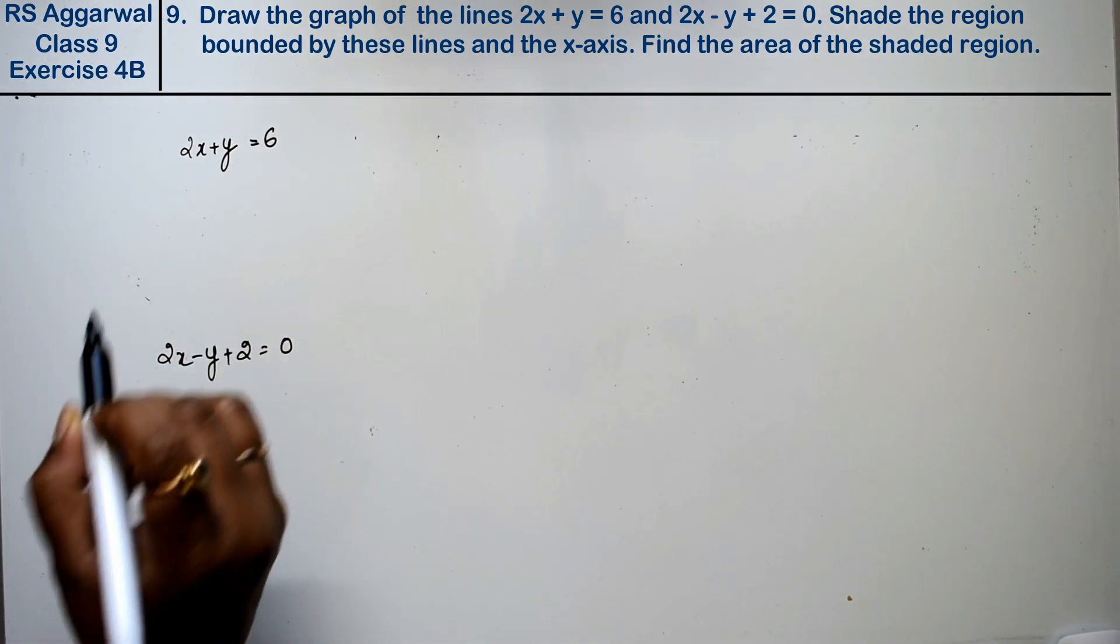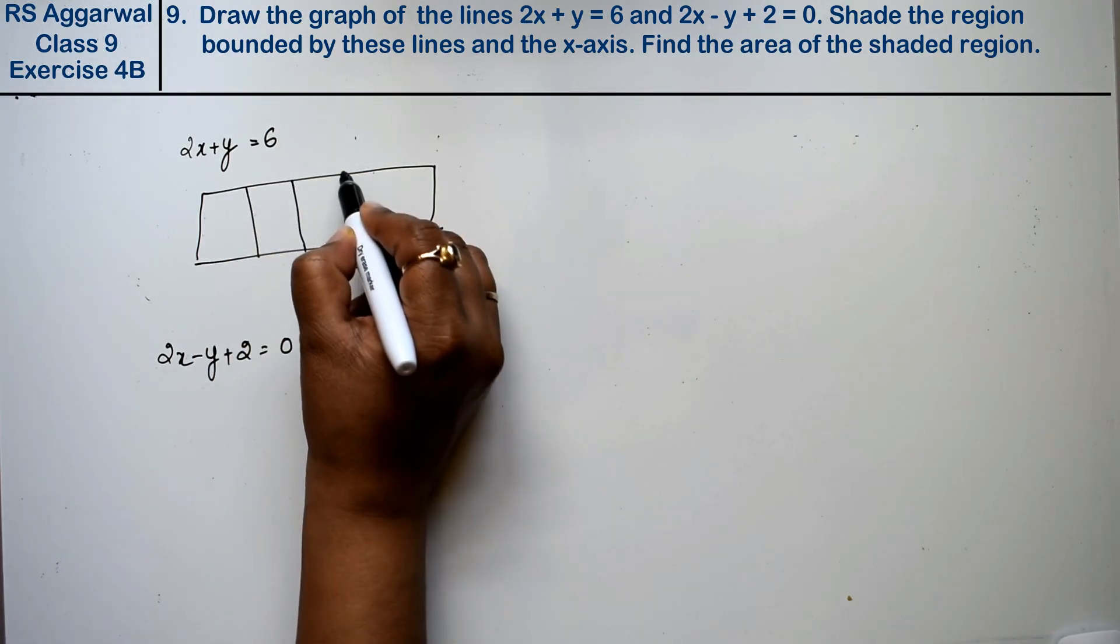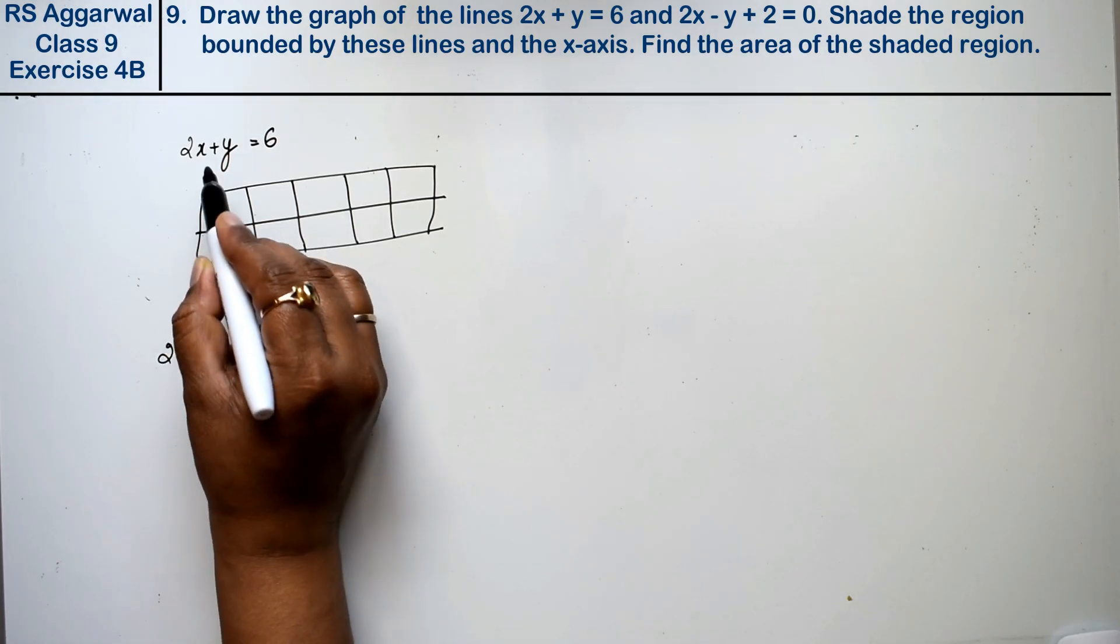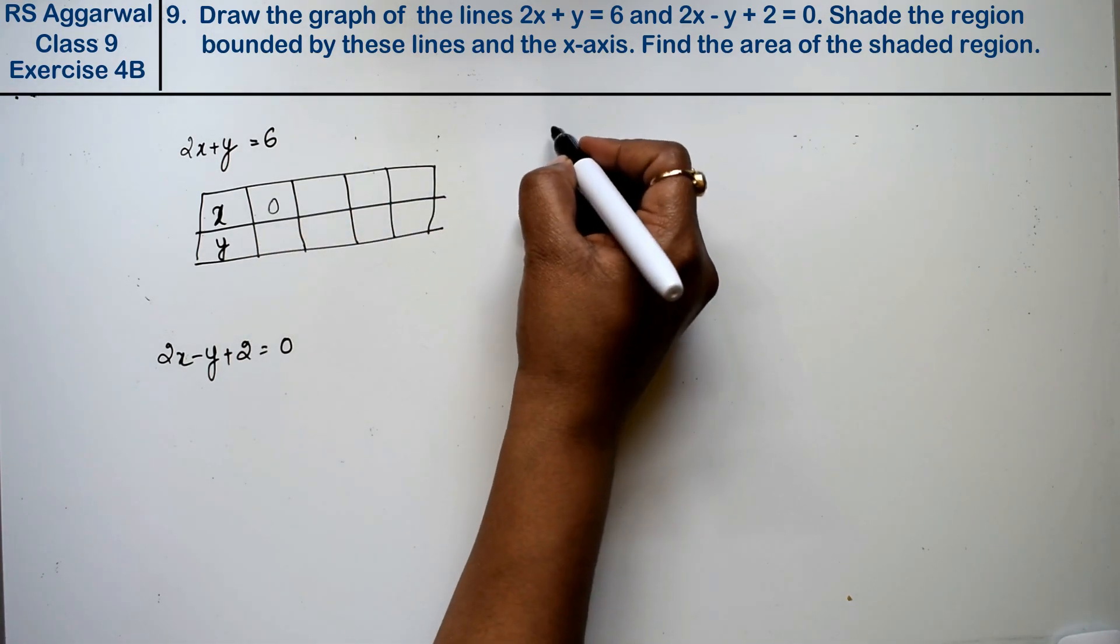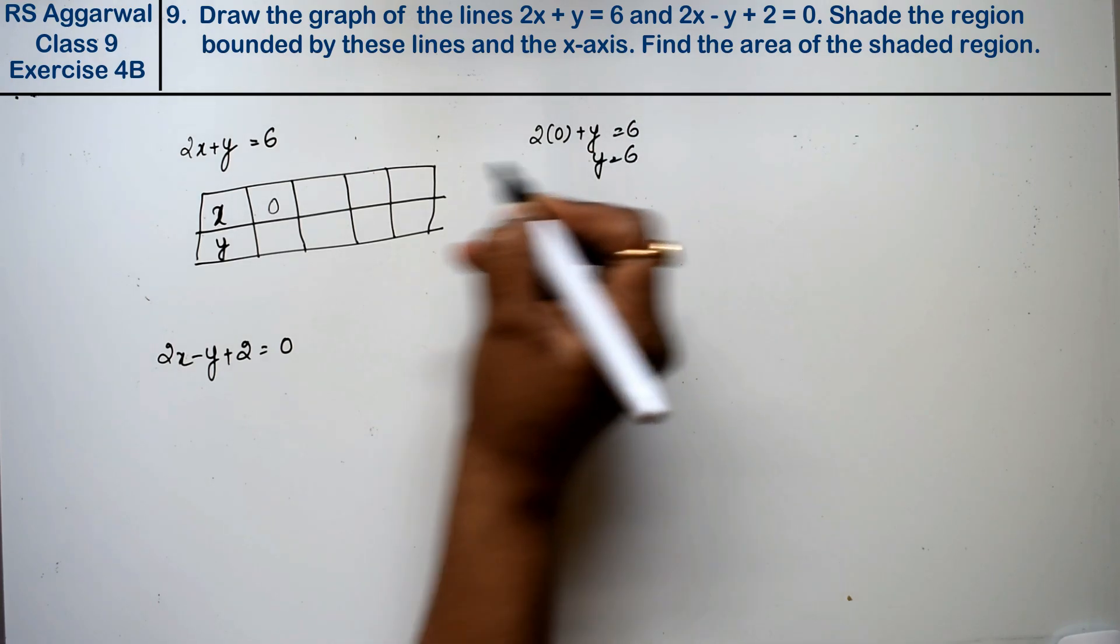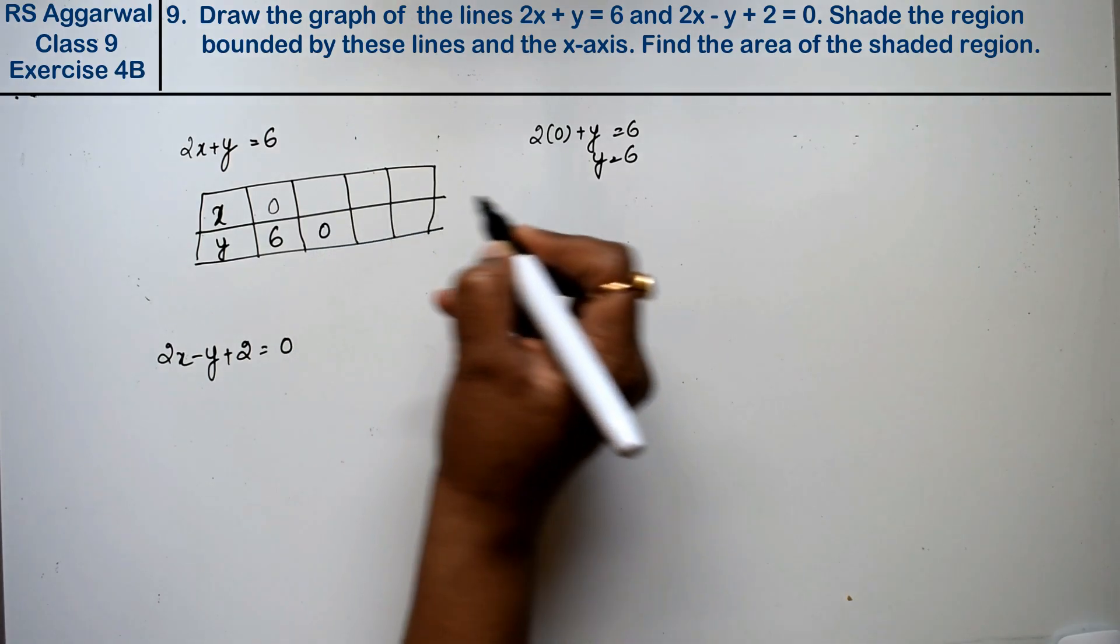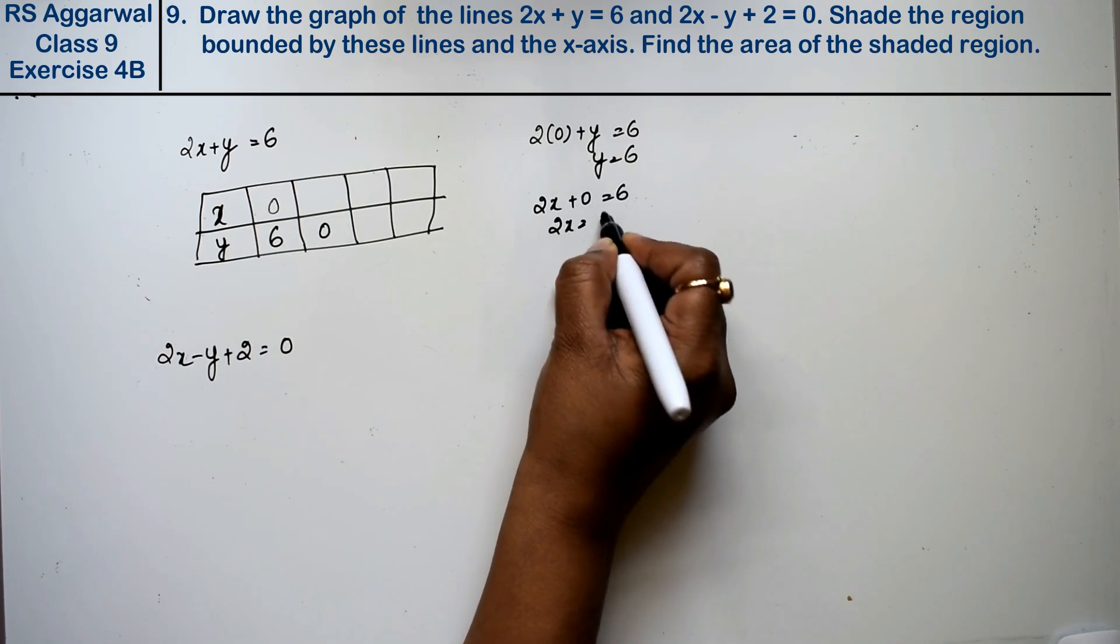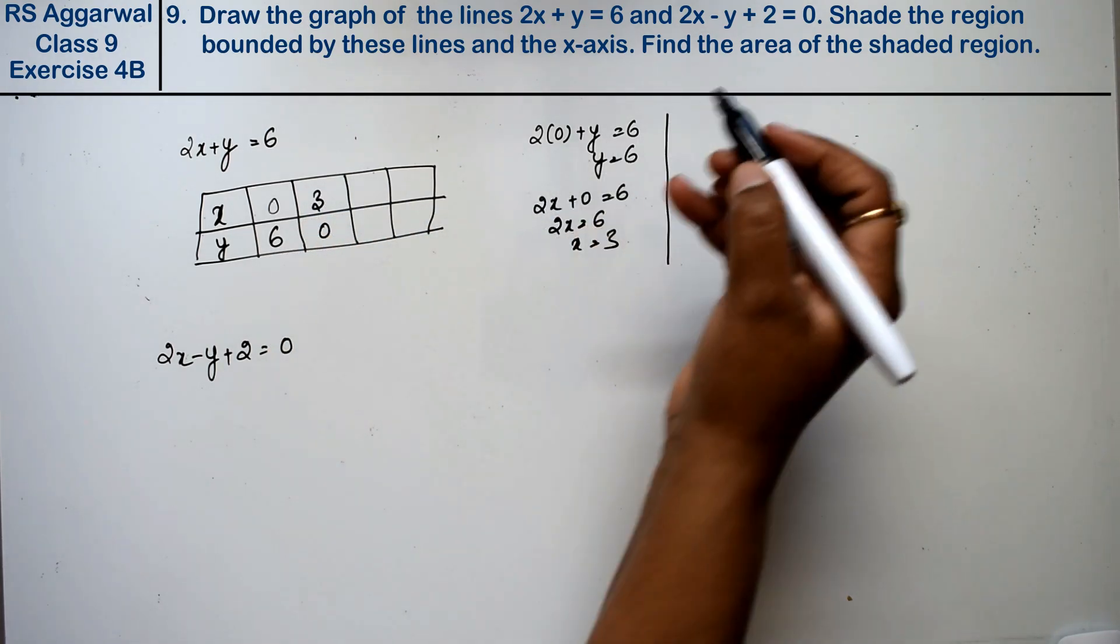For both lines we will make a graph, so we will make a table with x and y values. Now if we take x's value 0, then how much is y? See, 2 times 0 plus y equals 6, so y is 6. If we take y to 0, then what happens? 2x plus 0 equals 6, so 2x equals 6, x is 3.